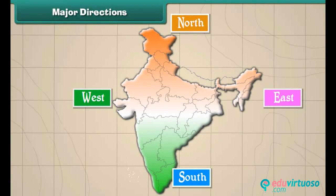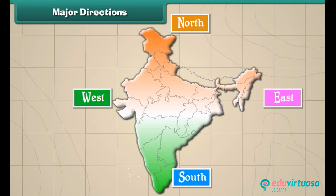Major directions: There are four main directions. They are North, East, South, and West. The four letters N, E, S, and W represent these directions.